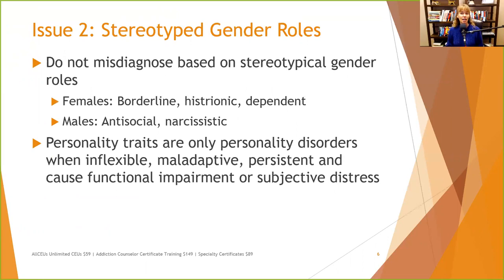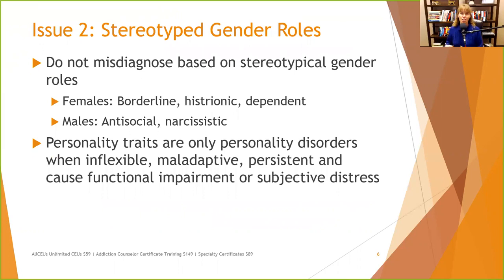Issue number two: stereotyped gender roles. We don't want to misdiagnose a strong, forceful female person as having antisocial characteristics. Likewise, if that person adheres to more traditional gender roles, we also don't want to categorize them as having dependent characteristics. Males can often be labeled as antisocial or narcissistic — think about CEOs, heads of organizations, sports athletes who tend to be very sure of themselves and sometimes somewhat manipulative in order to achieve their goals.